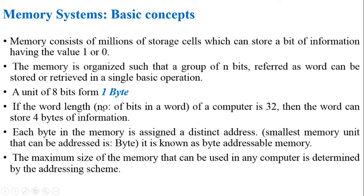A unit of 8 consecutive bits is named one byte. For example, if the word length of a computer is 32 bits, then the word can store 4 bytes of information — since 32 bits is a combination of four 8-bit groups, i.e., 4 bytes.